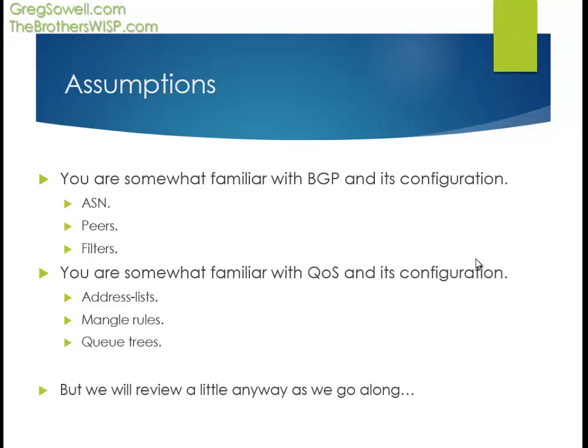Assumptions are that you've either looked at routing videos before - mine or somebody else's. I did some BGP routing videos for MUM previously. So you're going to be somewhat familiar with ASNs, autonomous system numbers, peers, creating peers, and filters to filter routes. You'll also need to be familiar with QoS and its configurations: address lists, IP firewall address lists, mangle rules in the firewall, and Qtrees - which are how you actually apply quality of service to traffic itself.